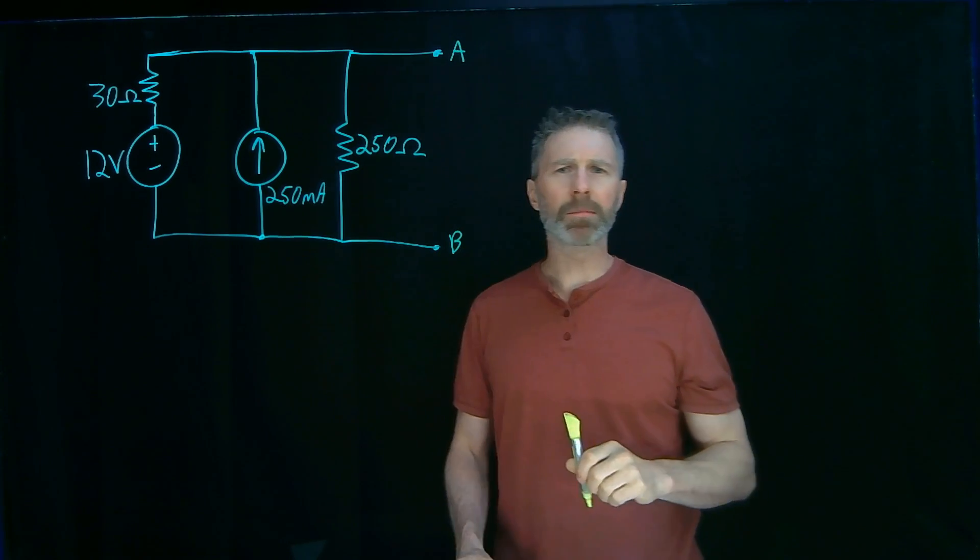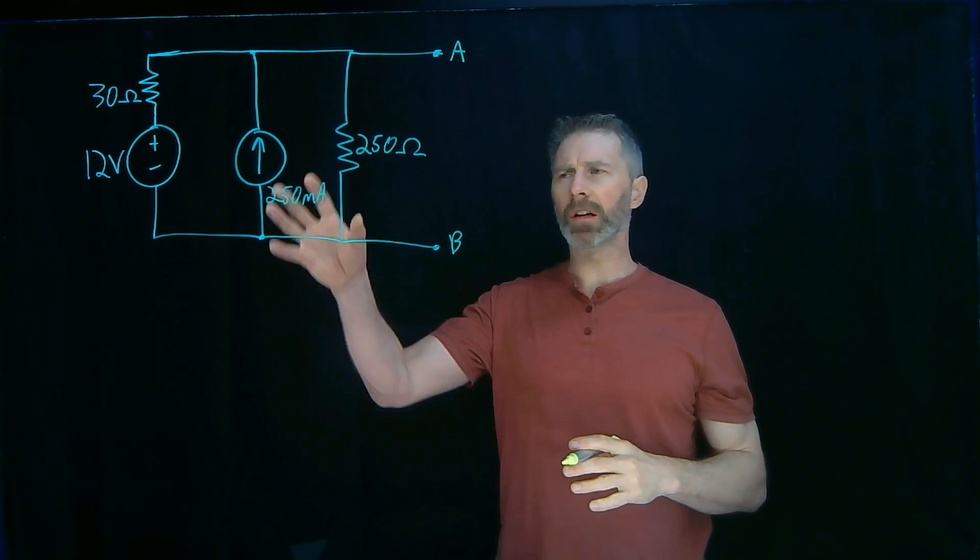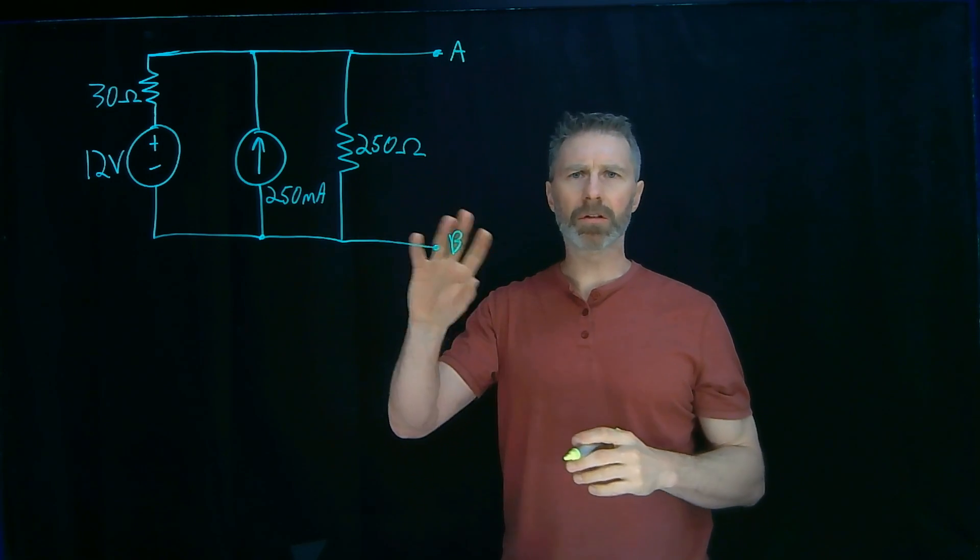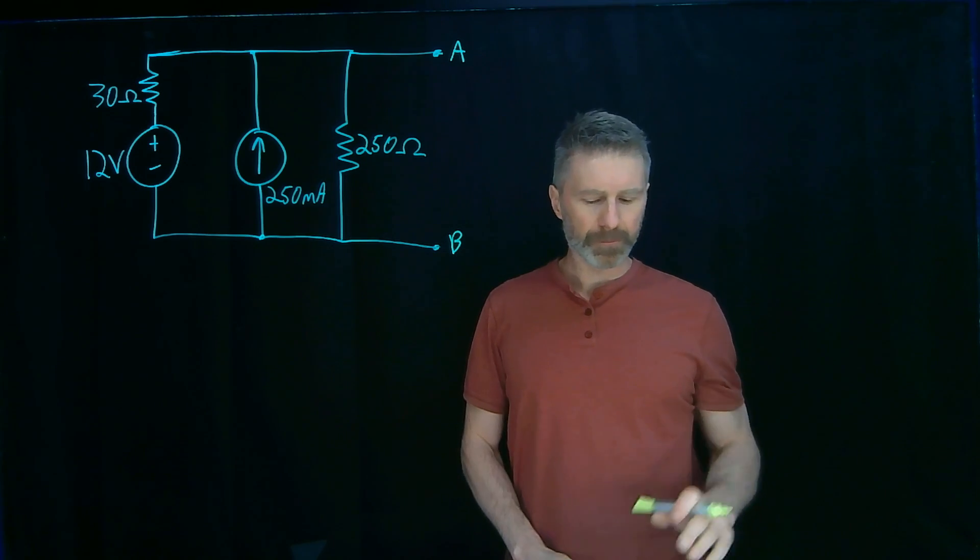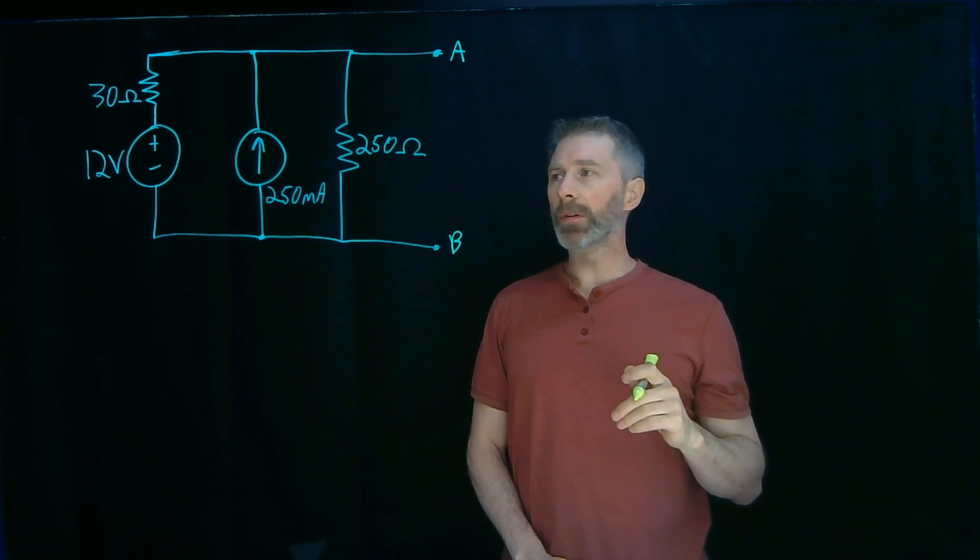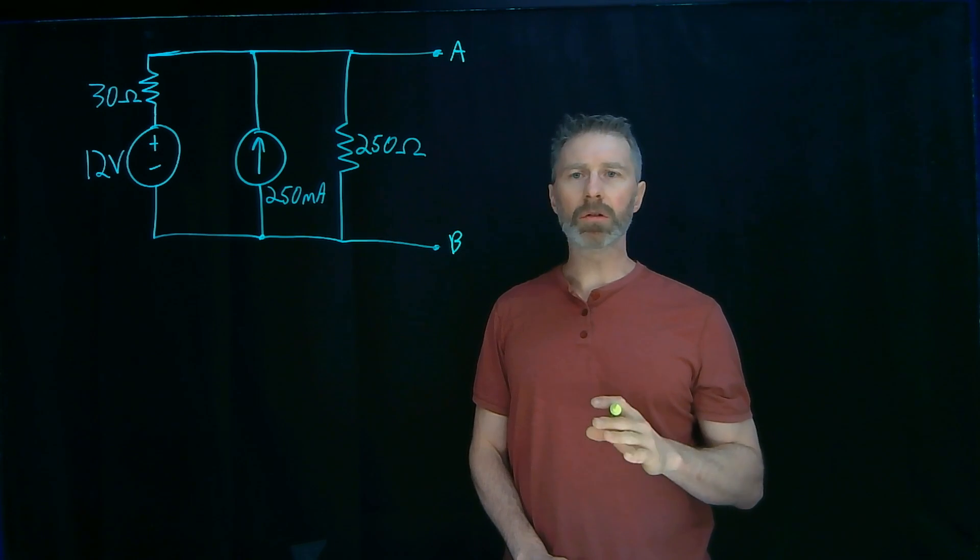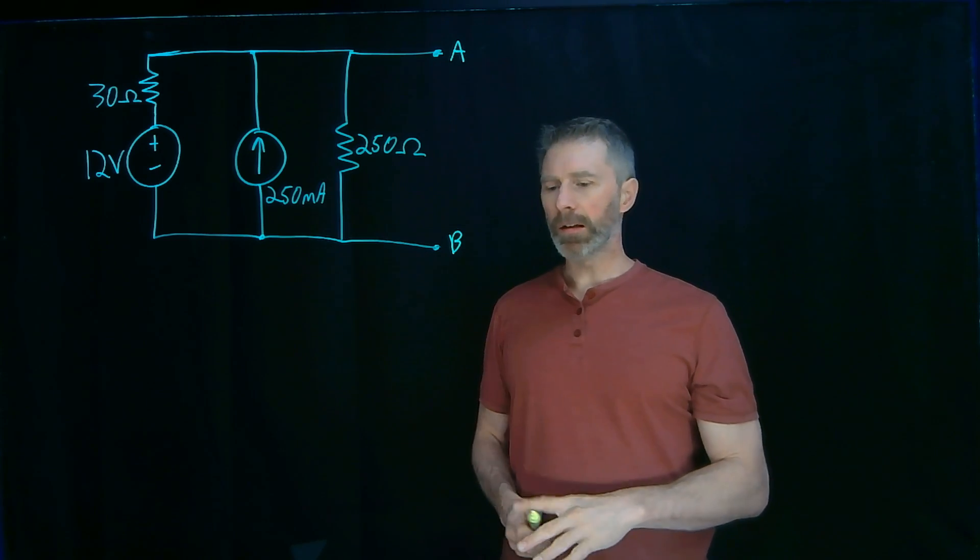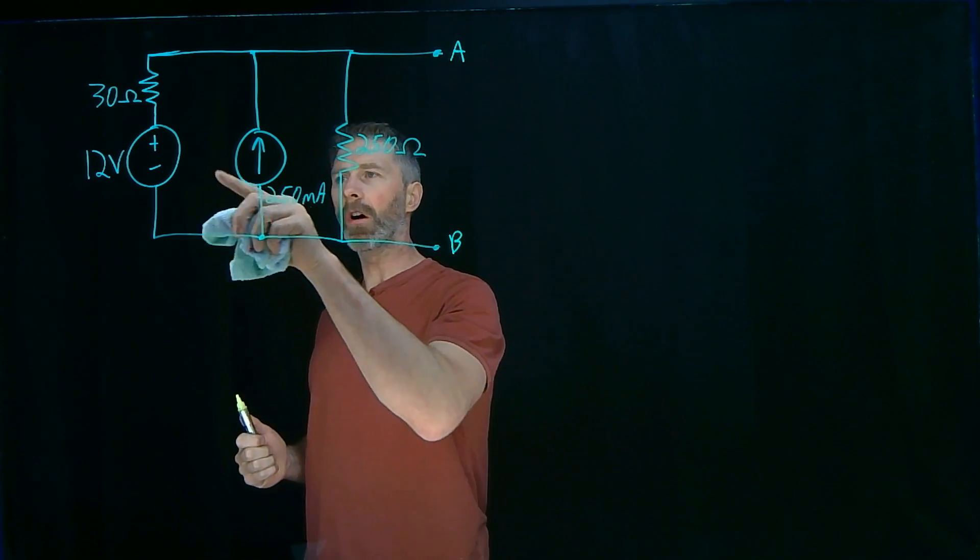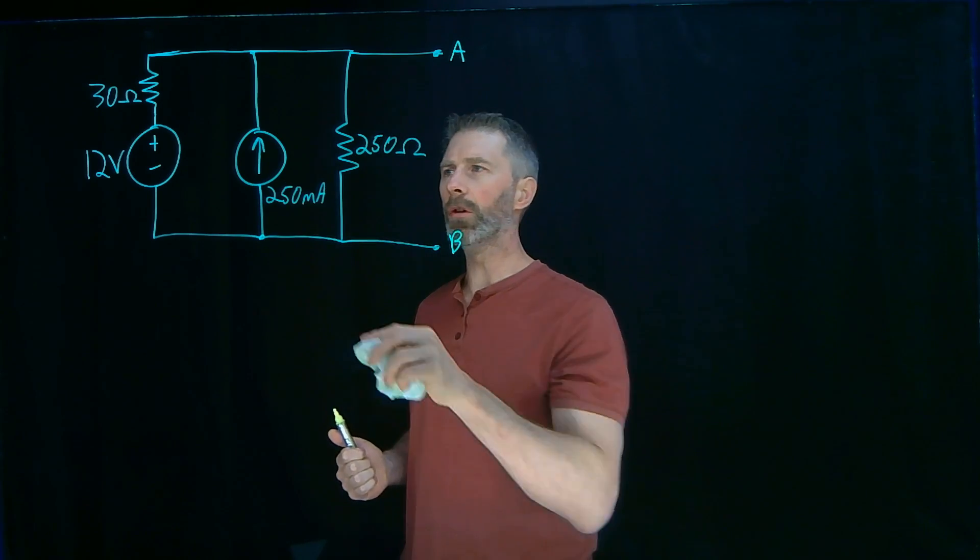This is just a step to keep track of where that load port is, especially if it's a more complicated circuit. The third step is to calculate the Norton resistance. The way you do that is in two steps. The first is to zero all of the sources. To zero the sources, I will convert all voltage sources to shorts and all current sources to opens.